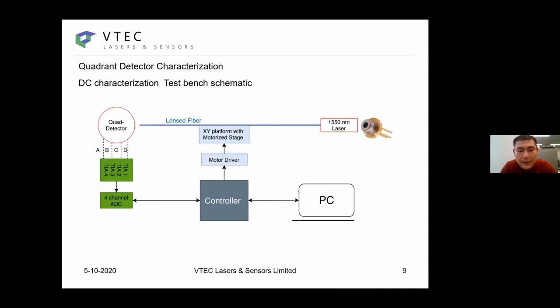Here you can see the arrangement of the DC calculation of the test bench. We have a quadrant detector and developed four-channel TIA and four-channel ADC controlled by a controller, and data is fetched on the PC. PC also controls the movement of a two-directional stage to which a lensed fiber is attached, so we can change the position of the light spot on top of the quadrant detector.